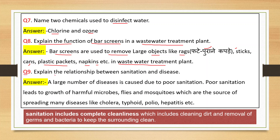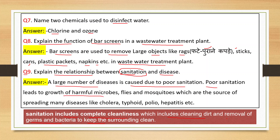Question number nine: Explain the relationship between sanitation and disease. Sanitation includes complete cleanliness which includes cleaning dirt and removal of germs and bacteria to keep the surroundings clean. A large number of diseases are caused due to poor sanitation. Poor sanitation leads to growth of harmful microbes, flies and mosquitoes, which spread diseases like cholera, typhoid, polio, hepatitis, etc.